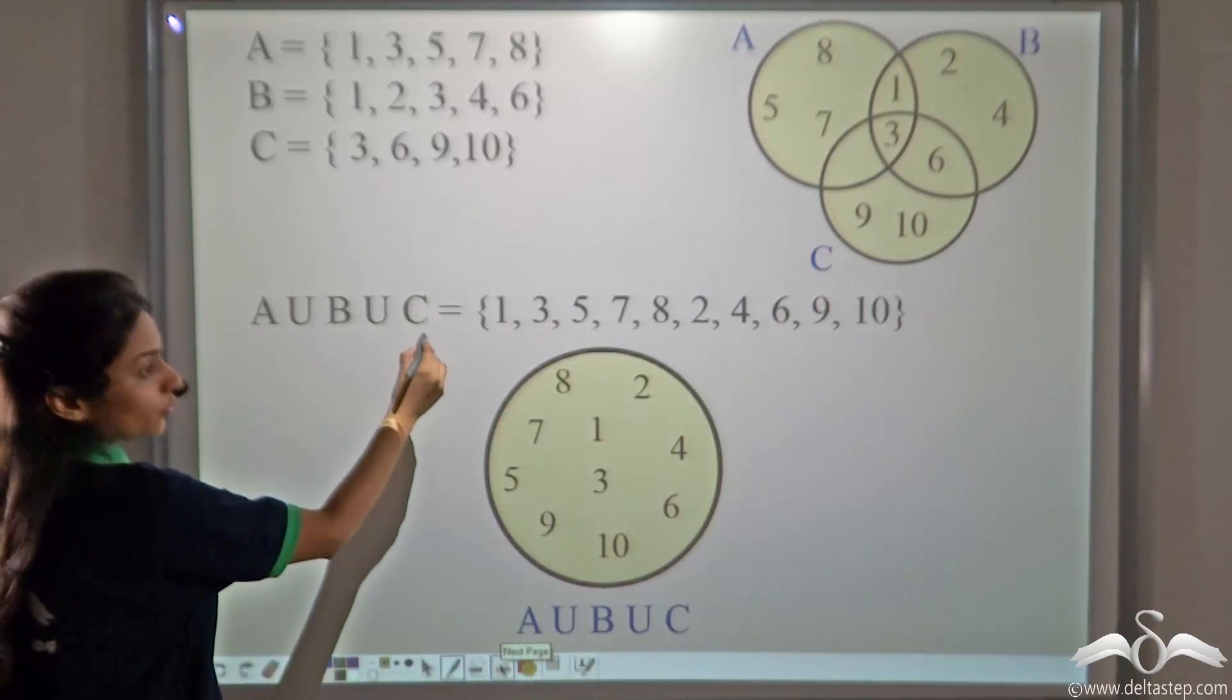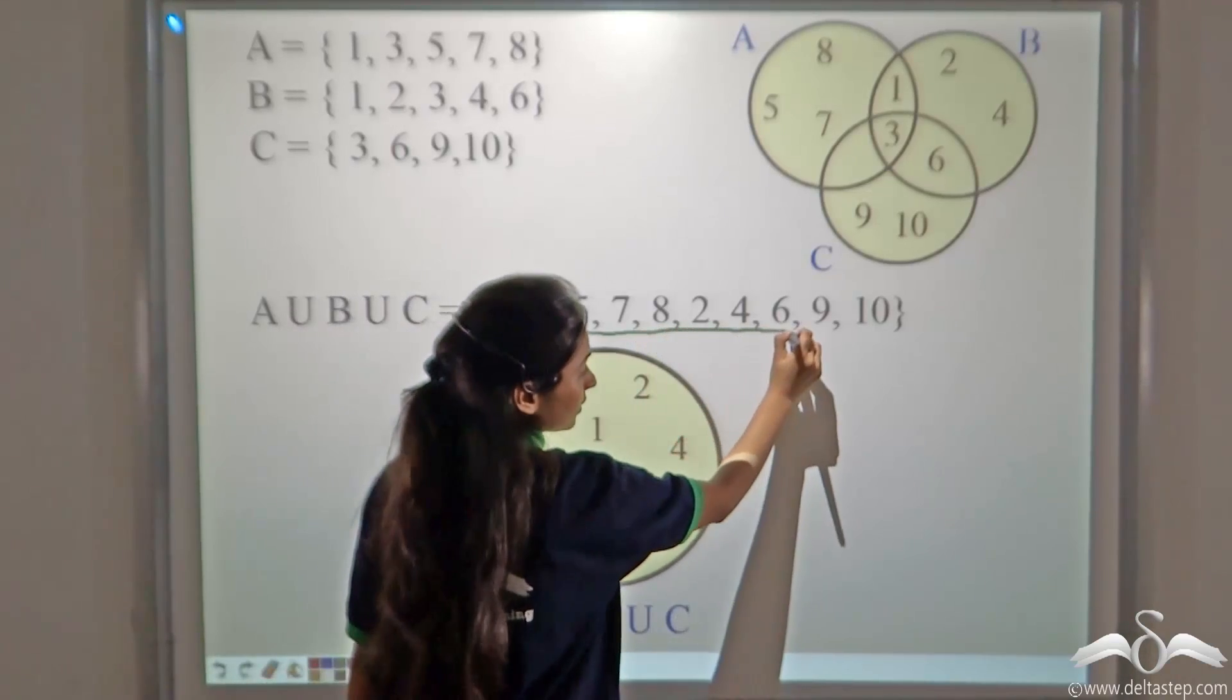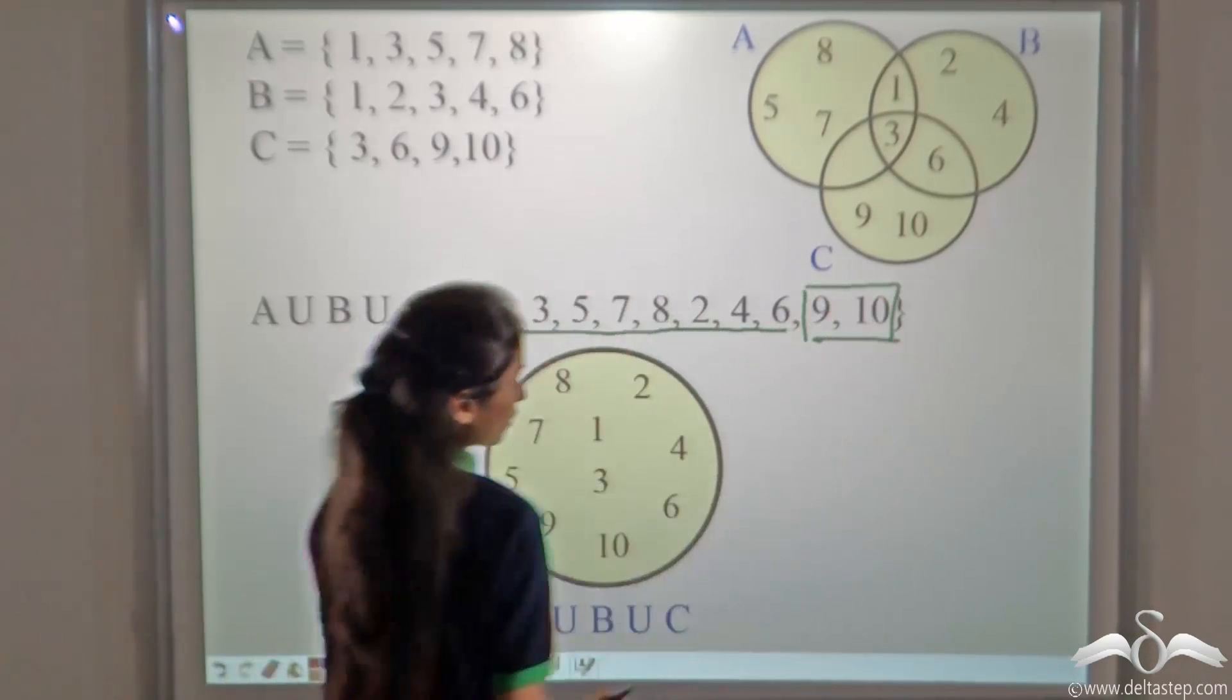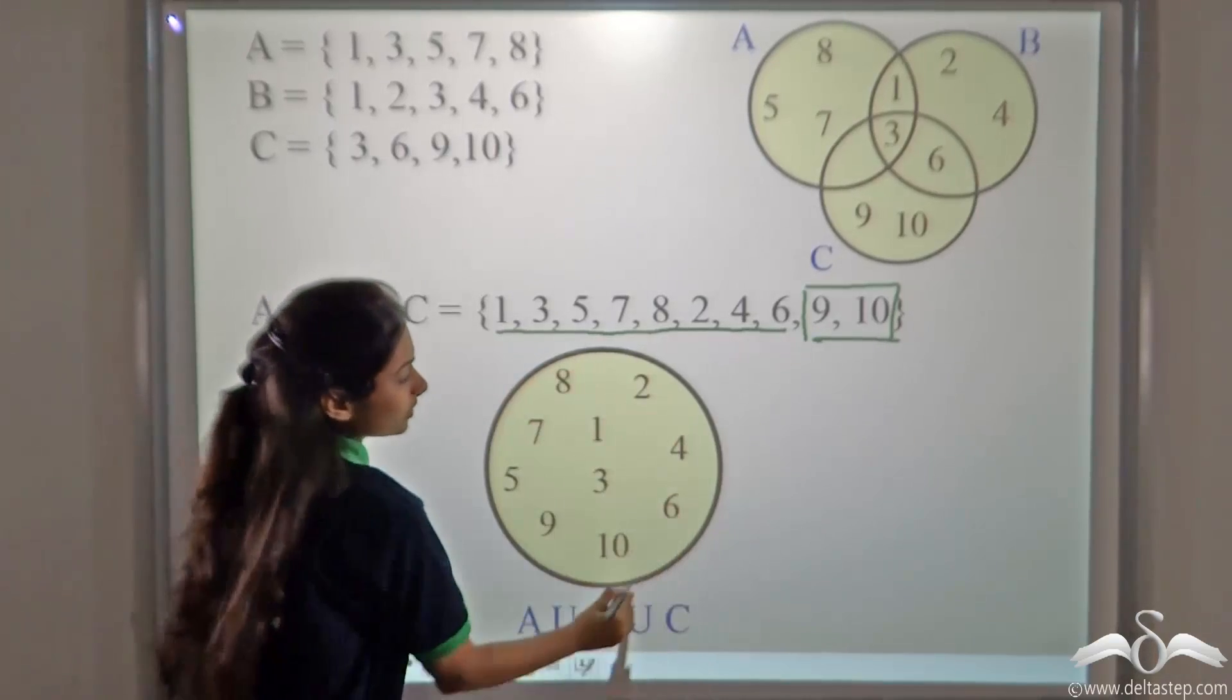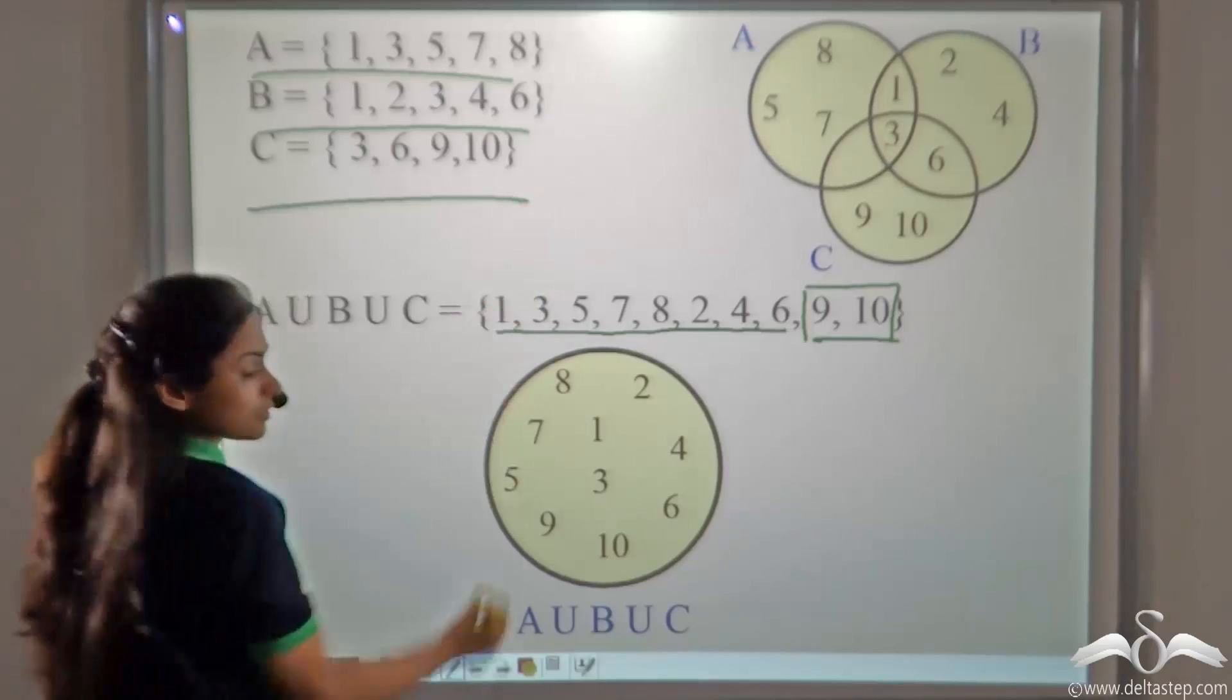A union B union C will give us the elements present in A and B plus the elements present in C. We get all the elements which are present in A, present in B or present in C.